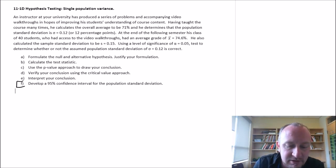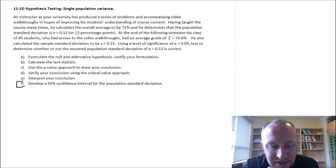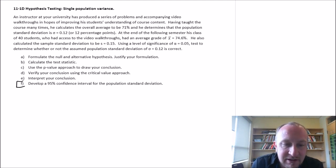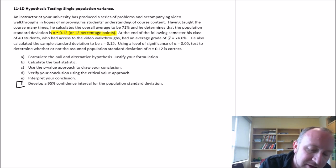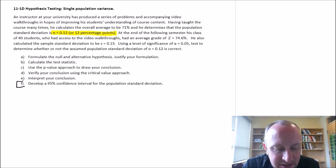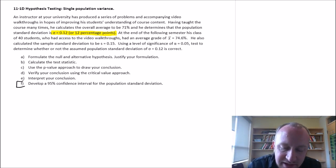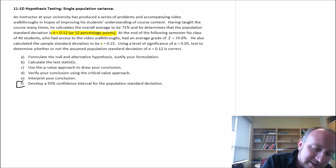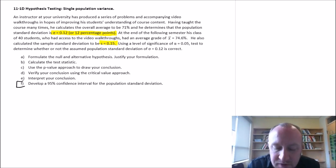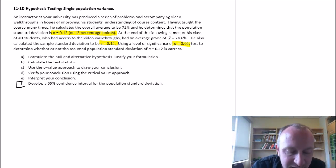So here we're looking at an instructor who has produced a series of problems and accompanying videos, sounds familiar I think, in hopes of improving a student's understanding of the course content. Having taught the course many times, he calculates the average to be 71% and determines the population standard deviation to be 0.12 or 12 percentage points. At the end of the following semester, his class of 40 students who had access to the video walkthroughs had an average grade of 74.6%. He also calculated the sample standard deviation to be 15 percentage points. Using a level of significance of 0.5%, test to determine whether or not this assumption is correct.